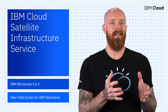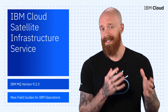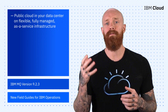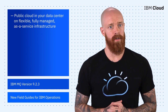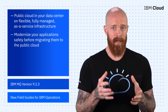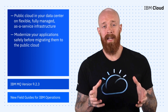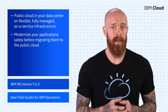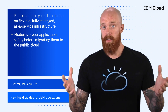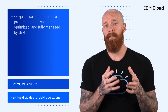To start things off this week, let's take a look at the all new IBM Cloud Satellite Infrastructure Service, which essentially allows you to have public cloud in your data center on flexible, fully managed as a service infrastructure. Satellite Infrastructure Service allows you to modernize your applications safely before migrating them to the public cloud. It also allows you to modernize parts of your data center stacks without breaking legacy application interdependencies. Best of all, you can have peace of mind when it comes to Satellite Infrastructure Service on-prem infrastructure.